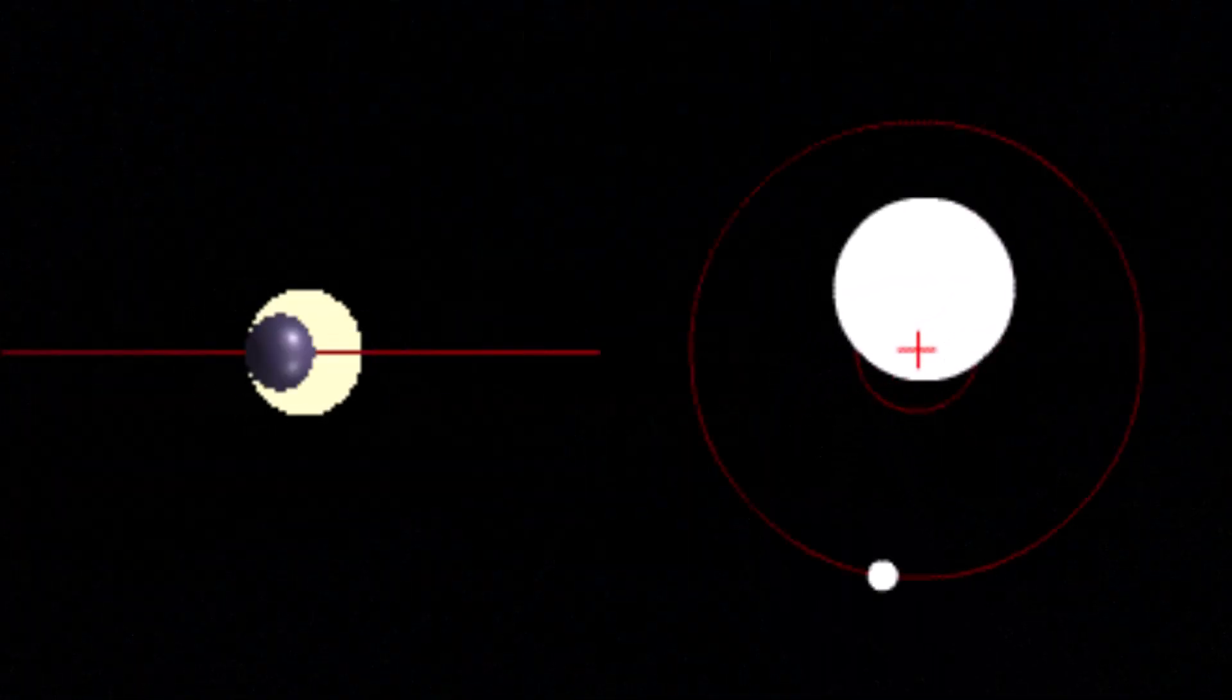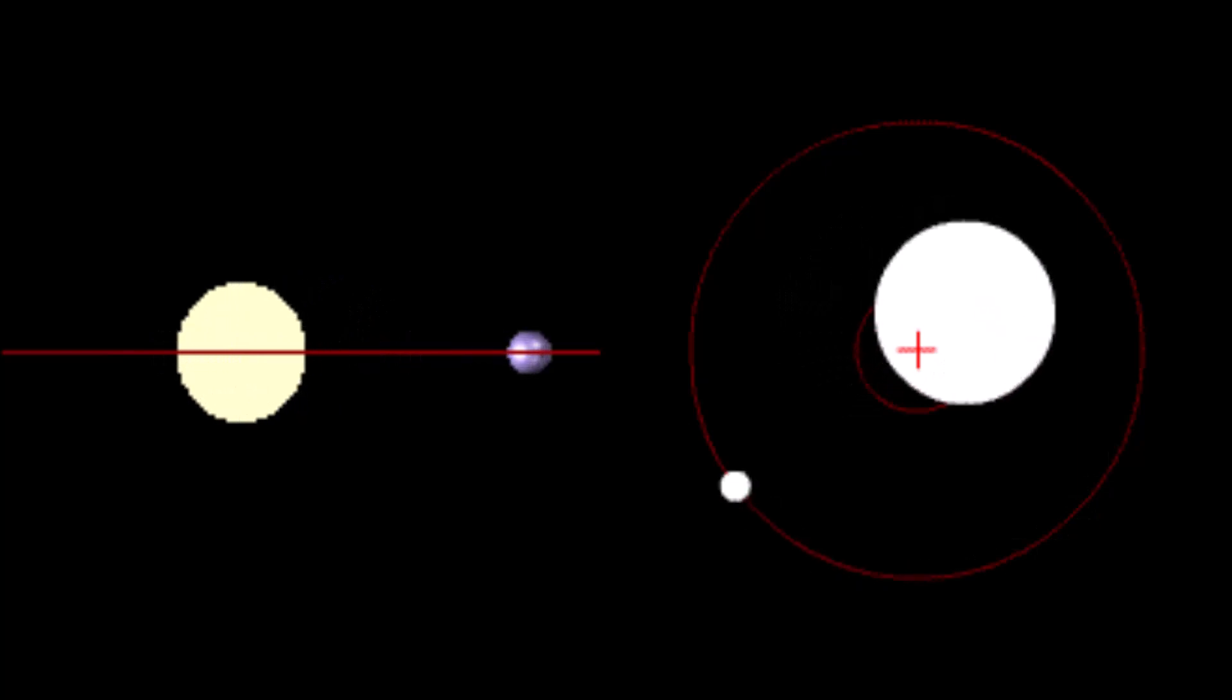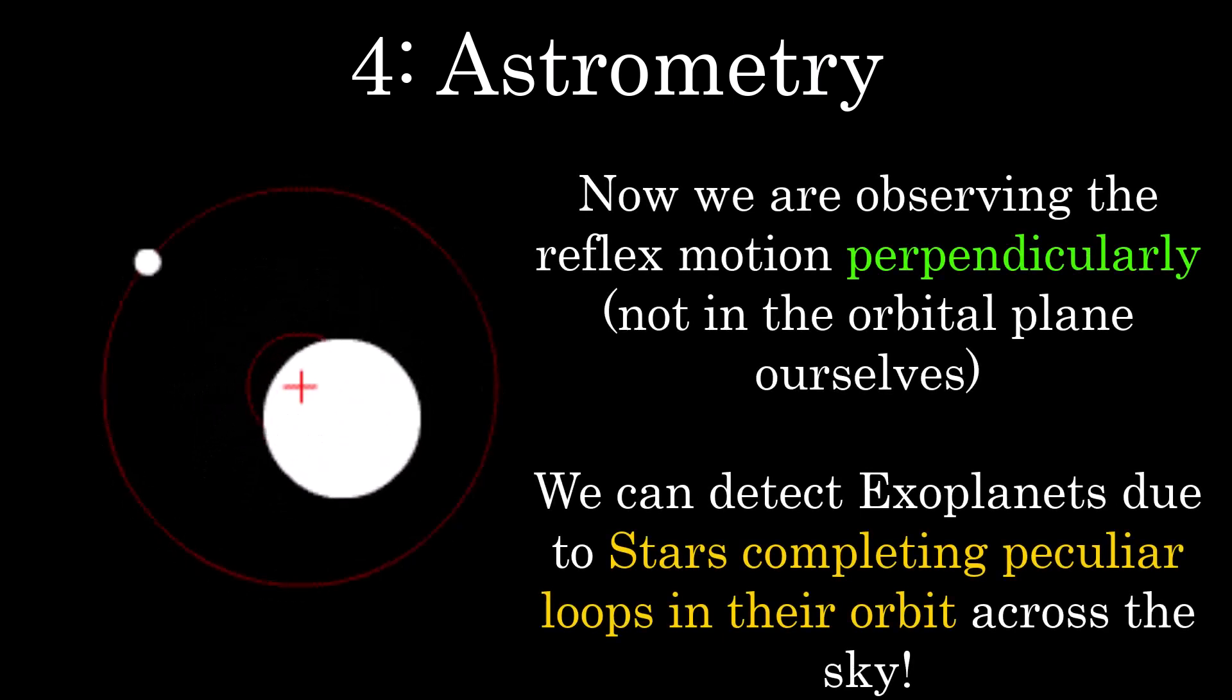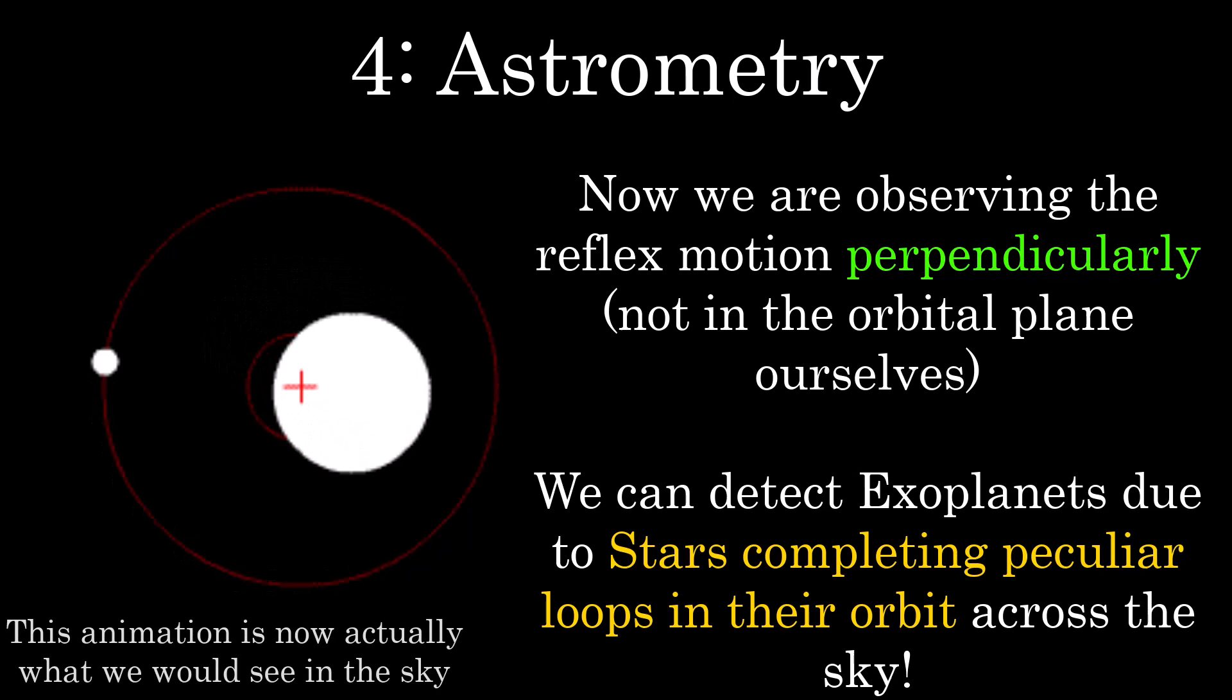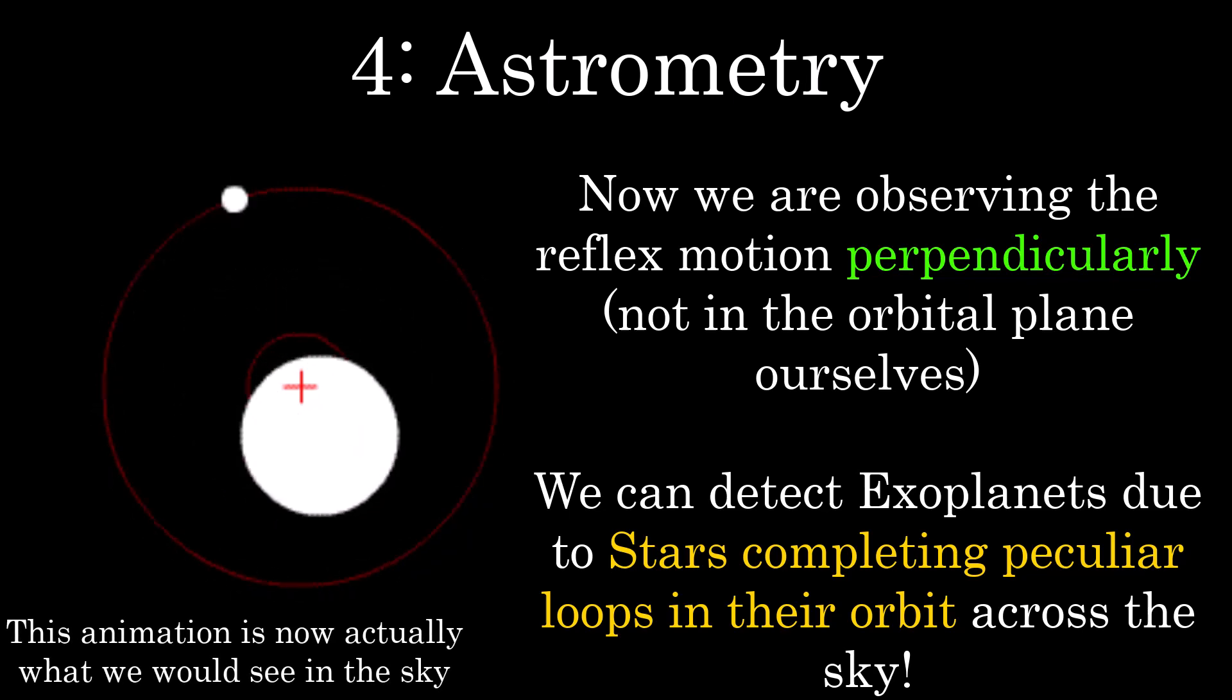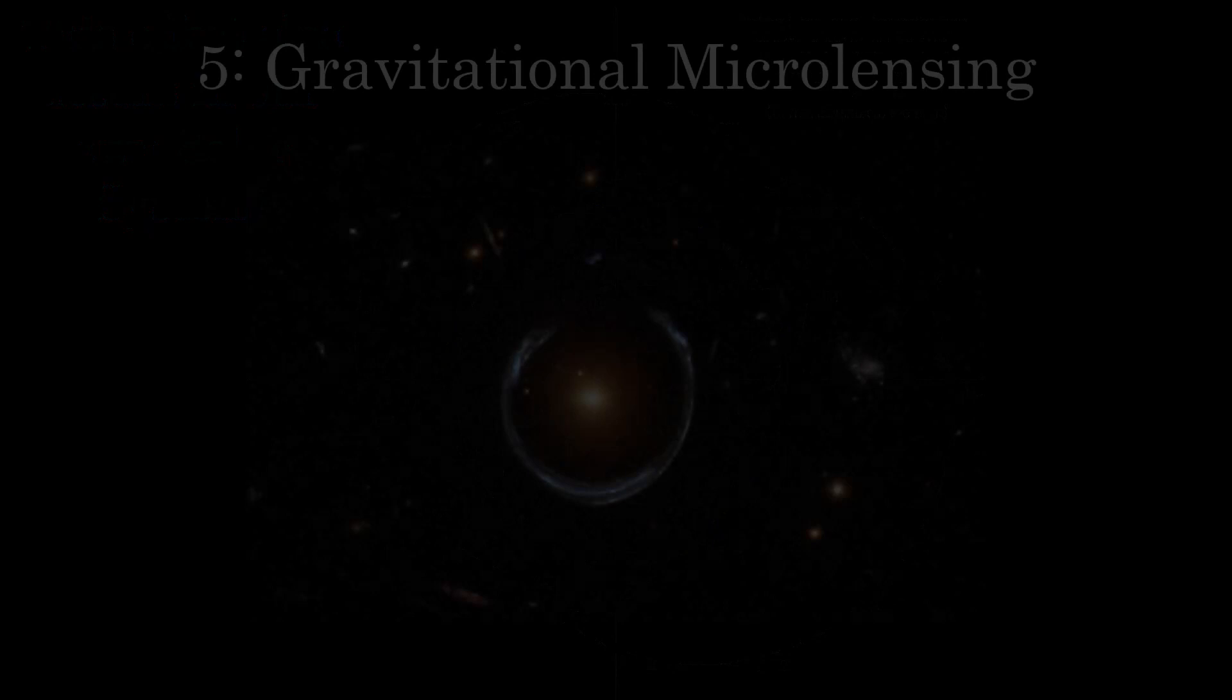Other than the two titans of exoplanet discovery methods, transit photometry and radial velocity Doppler measurements, there are a few other, less widely used, but still feasible processes humanity has implemented. One of these is called astrometry, which is similar to the previously discussed radial velocity method. Instead, for when the star is wobbling and orbiting the barycenter within our line of sight, astrometry analyzes stars which do so perpendicular to it. Essentially, we can see how the motion of stars appear to do little strange spins and peculiar loops across the sky over time, which only happens when there's an extrasolar planet orbiting it within the plane of the sky.